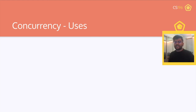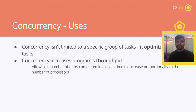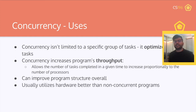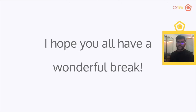So let's talk about why we want to use concurrency. We talked about it for the past two lectures — why do we care so much? Computers are already fast, but concurrency isn't limited to a specific group of tasks. It optimizes certain tasks and can increase a program's throughput — the number of tasks completed in a given time — which increases proportionally to the number of processors. If you use concurrency efficiently, you greatly increase the number of tasks done at the same time. It usually utilizes hardware better than non-concurrent programs. If you're writing linear code on a multi-core computer, you aren't utilizing your computer to its full capabilities and your code will generally be much slower than parallel or concurrent code. That's the end of the lecture — I hope you all have a wonderful break.